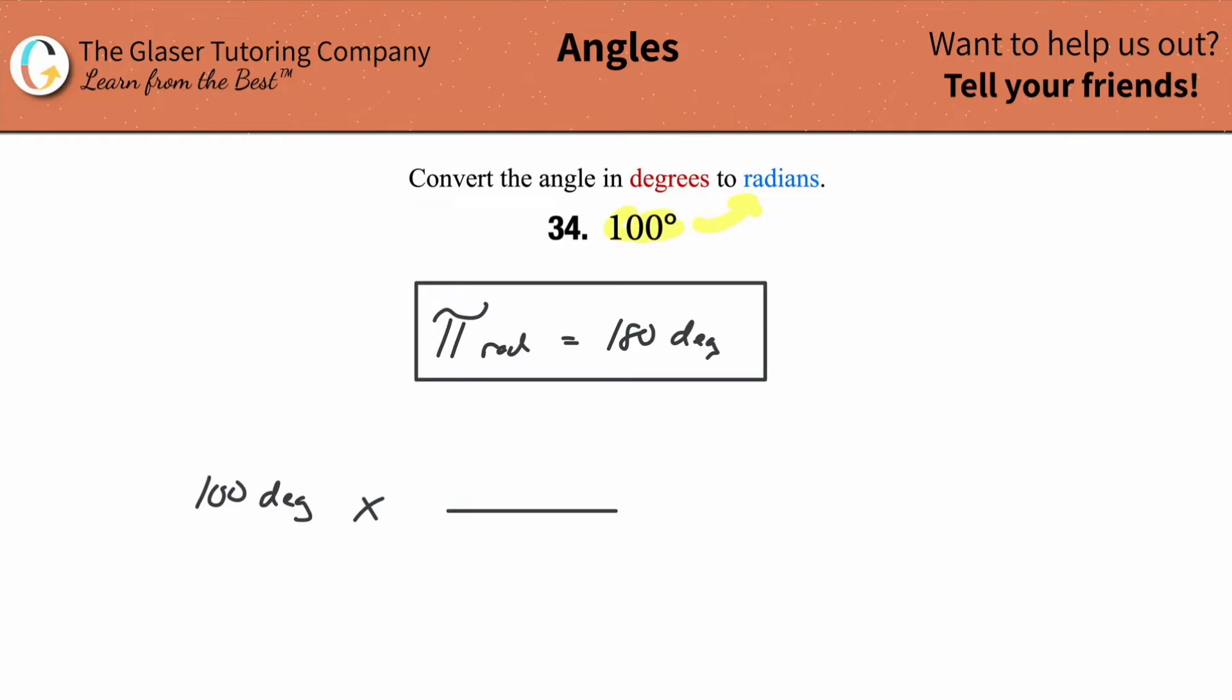So what we need to do then is we need to find our answer here in terms of radians. We don't want degrees. Remember, this is like saying 100 degrees over one. What I'm going to do now is I'm going to use my conversion fraction here, my conversion relationship, and I'm going to take the degree measurement and I'm going to plug it into the denominator.